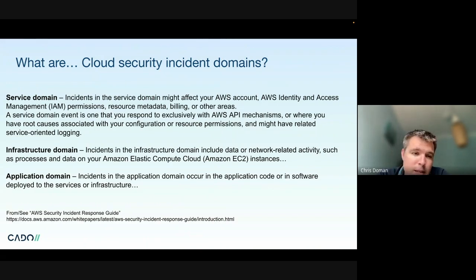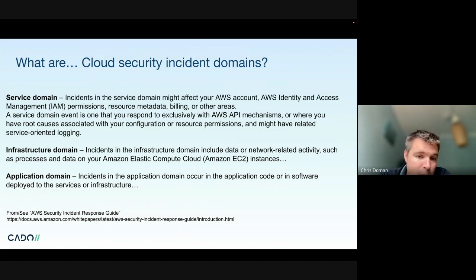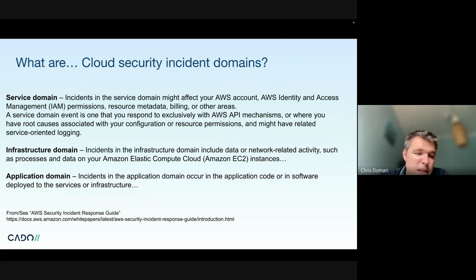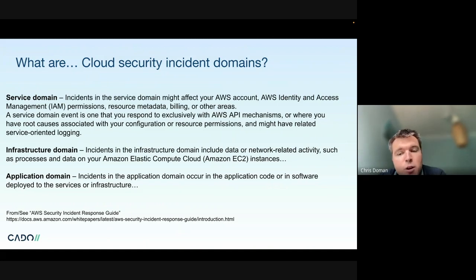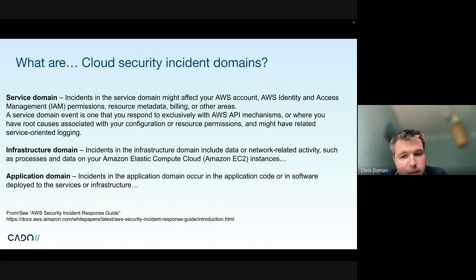There is a service domain, which includes things like AWS IAM and the billing APIs — essentially the metadata and control plane around your resources. Then you have the infrastructure domain, which includes compute like Amazon EC2, Kubernetes containers, and other things running your code. Finally, there's the application domain, which includes the application itself and its logs. There are overlaps between all these, but it's useful to know what types of data and resources you'll need to isolate.